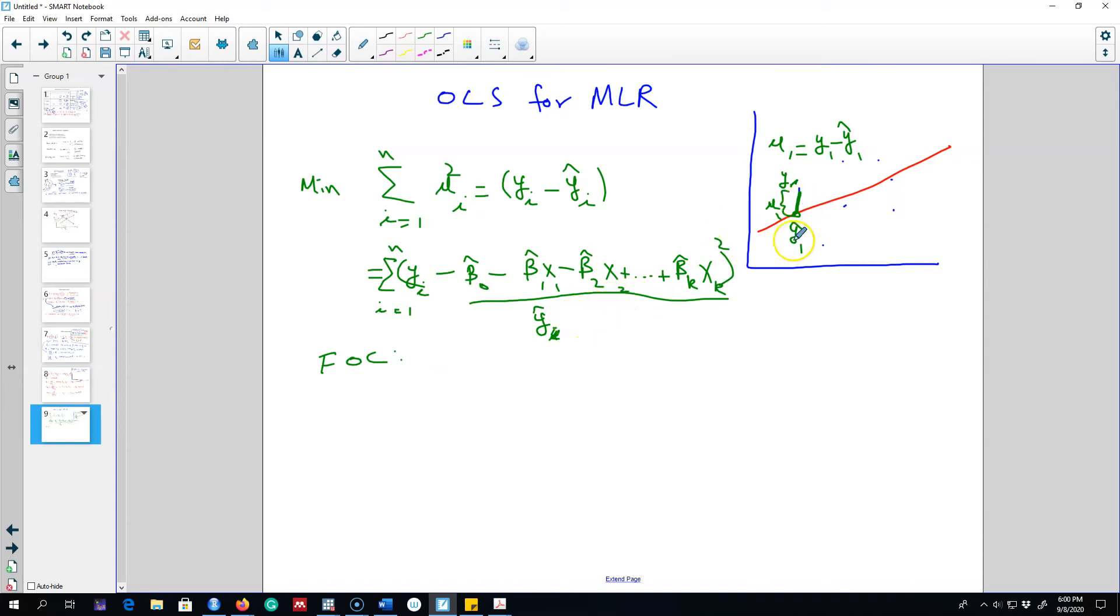But essentially, I cannot represent more than two dimensions here. I can only represent beta zero and beta one. It's very hard to even visualize more than two dimensions here. But this line has k dimensions. It's not possible to think about k dimensions mentally. So that's why we need mathematics.